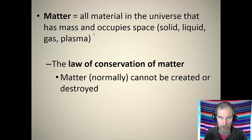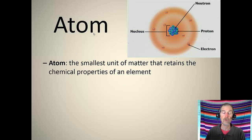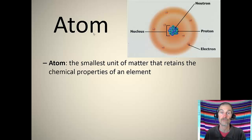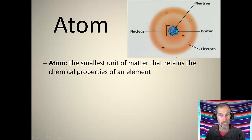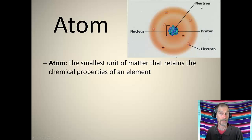What's an atom? If you break things down to their smallest parts, the atom is the smallest unit of matter that retains the chemical properties of an element. It is composed of protons, neutrons, and electrons. Protons have positive charge, electrons have negative charge — if you wonder what charge is, just play with a magnet. Neutrons don't have any charge at all.